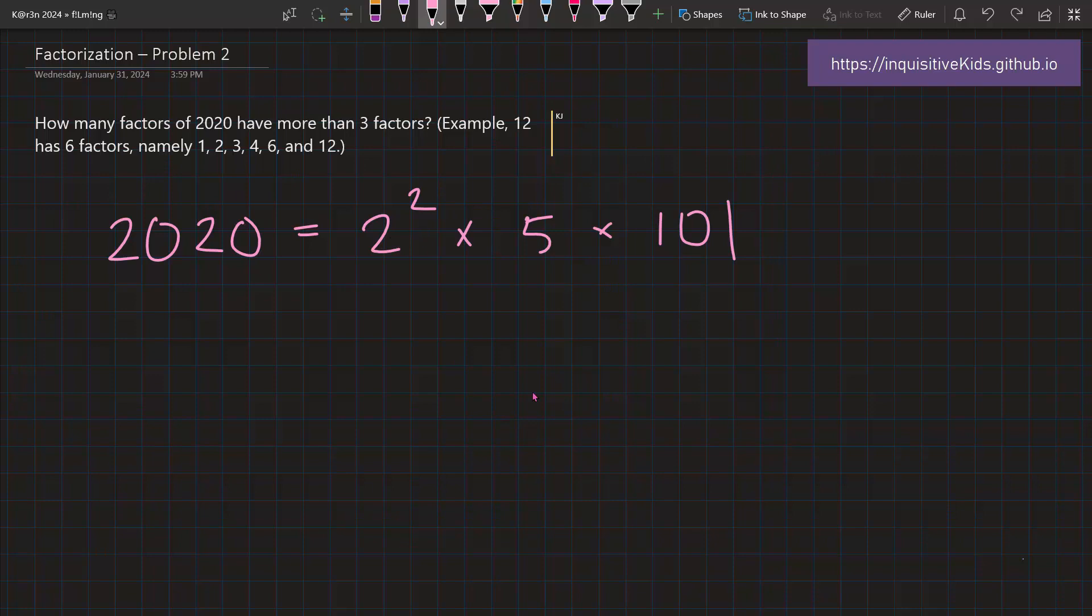So let's think about what 3 factors mean. If the number has at least 2 factors, so at least 1 more than 1 and itself, then this number is not prime, right? So it's basically saying how many factors of 2020 are composite.